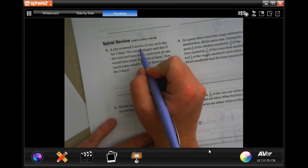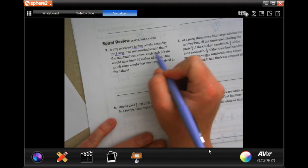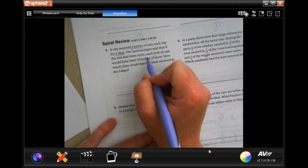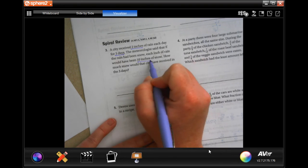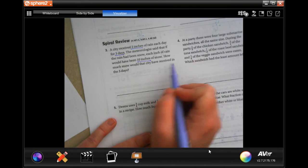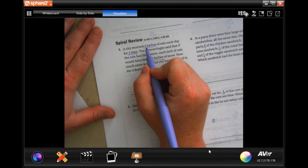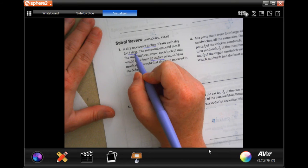A city received 2 inches of rain on each day for 3 days. The meteorologist said that if the rain had been snow, each inch of rain would have been 10 inches of snow. How much snow would that city receive in 3 days?